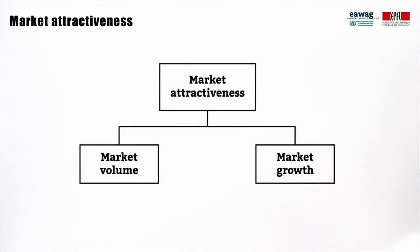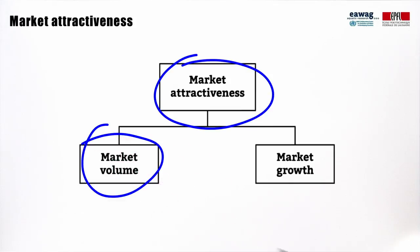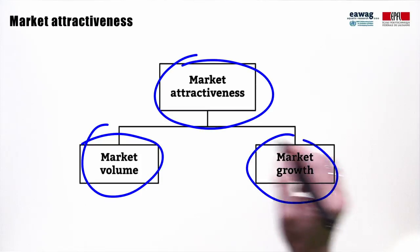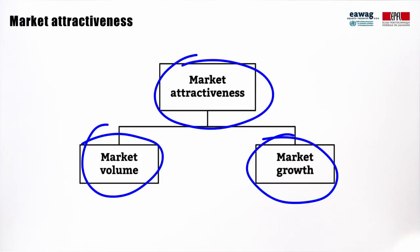In the market-driven approach, market attractiveness takes into account both the current market volume and the future potential for market growth. Market volume is defined as the sum of the value of all available products in a given market. For example, for animal feed, that would be the price and number of units sold in a defined geographical area. Market growth is defined as the growth of the type of product over a specified period. If this cannot yet be determined, the historical growth of a product can be extrapolated to estimate future growth.